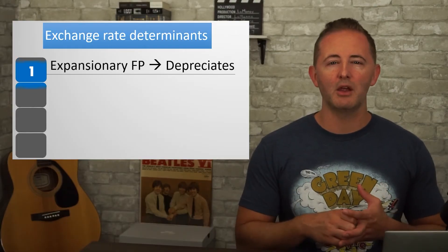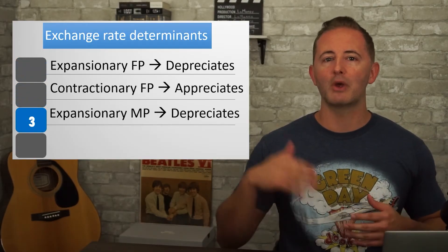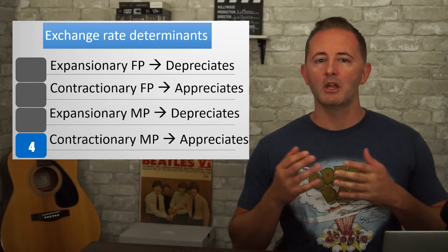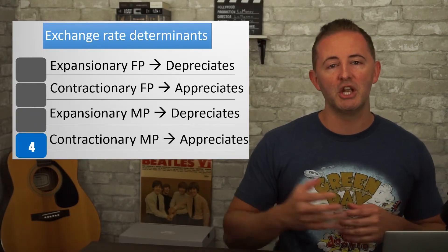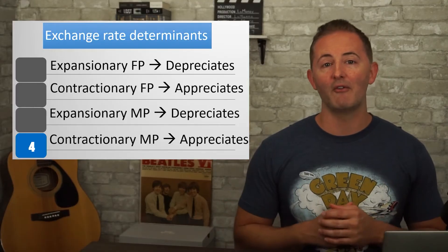If you're getting ready for a final exam or the AP test, fiscal and monetary policy are probably the things you'll see most often, and this can be a trap since you've learned those policies in the context of a closed economy. But now we're opening it up, so those policies also impact the FEM. Expansionary policies — whether fiscal or monetary — lead to a currency depreciation by raising the price level and output. Contractionary policies, on the other hand, lead to a currency appreciation by decreasing the price level and output.